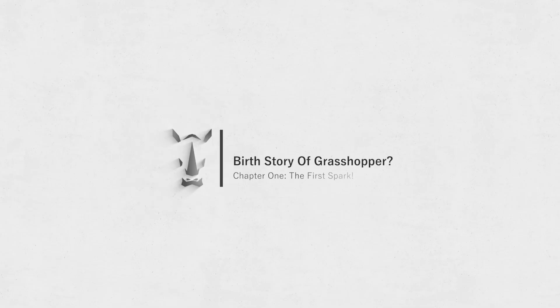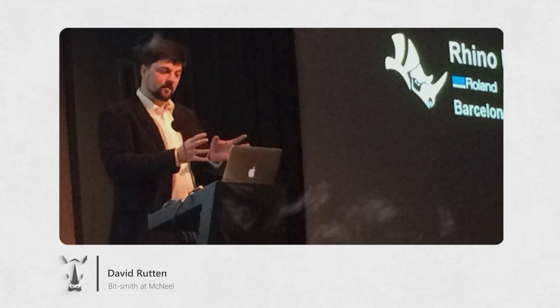The birth story of Grasshopper — chapter one, the first spark. Before Grasshopper even existed, a brilliant man named David Rutten had an amazing idea while working at McNeel, the company behind Rhino. McNeel was always looking for new ways to make its tools more powerful. David noticed how much designers struggled with parametric and algorithmic modeling — every time they wanted to make a small change in their design, they had to rebuild everything from scratch. David's original goal was simple yet revolutionary: to create a tool that let designers work with visual scripting.